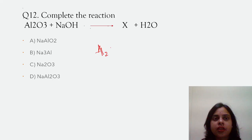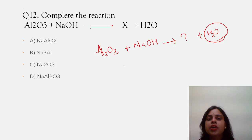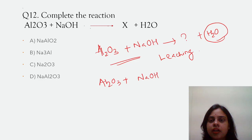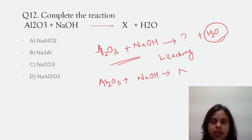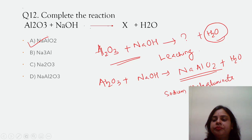Complete the reaction: aluminium oxide reacts with sodium hydroxide — this is the process of steam leaching. When aluminium oxide (Al₂O₃) reacts with sodium hydroxide (NaOH), we get sodium meta-aluminate (NaAlO₂) plus water (H₂O). So the correct answer is A, sodium meta-aluminate.